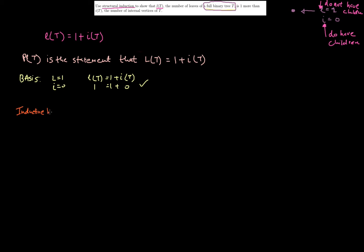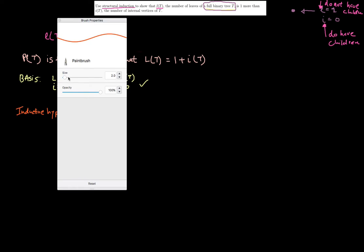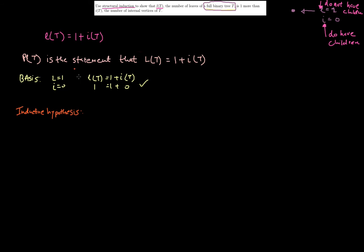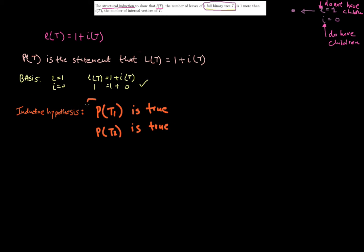Given this tree that just has one node which is the leaf node, the basis is correct because L of T equals one and I of T equals zero, so L(T) = 1 + I(T) holds. Now for the inductive hypothesis, I'm going to assume there are some trees T1 and T2 for which the proposition P(T) is true.